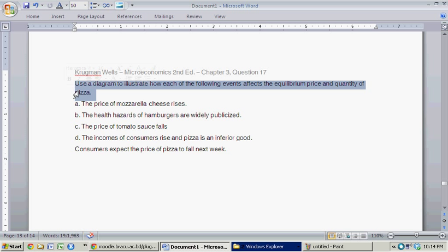Use a diagram to illustrate how each of the following events affects equilibrium price and quantity of pizza. Part A is the price of mozzarella rises.